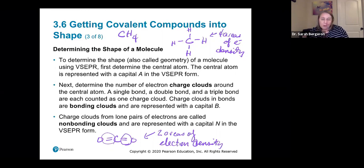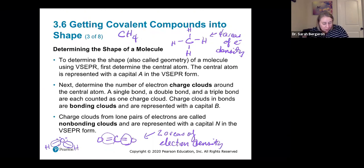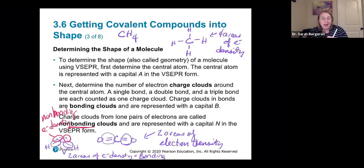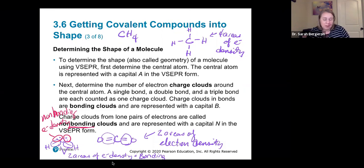Then you have to look at clouds from lone pairs of electrons. For example, when we draw oxygen, we know oxygen is bound to two hydrogens, but it also has two lone pairs of electrons. So the two bonds are two areas of electron density, and those are bonding. But we also have two more areas of electron density — these are non-bonding. Non-bonding clouds are only held by one atom instead of two, and because they're only held by one atom, they actually take up more space and push on the other bonds inside the molecule.